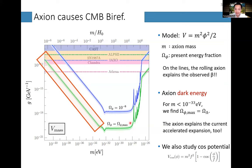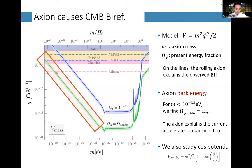Anyway, the key point is: if you're on the green line, this axion-like particle explains both dark energy and cosmic birefringence simultaneously. That's a very interesting case.